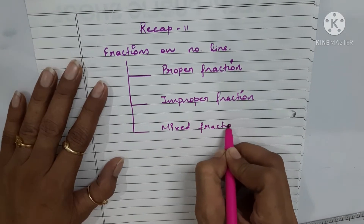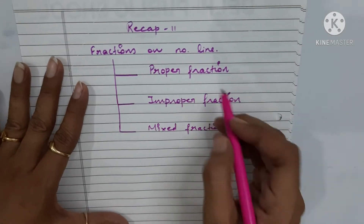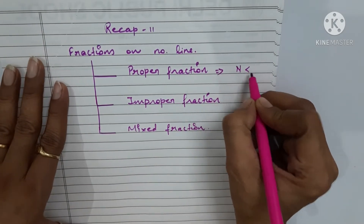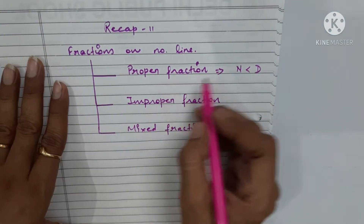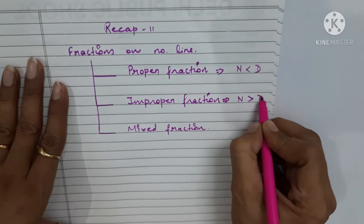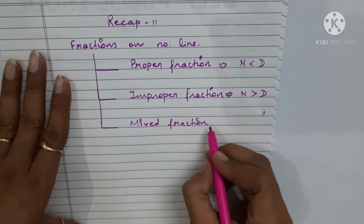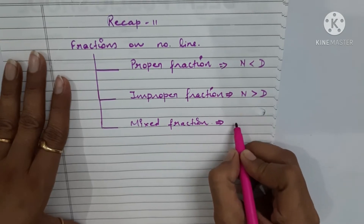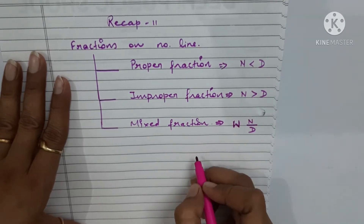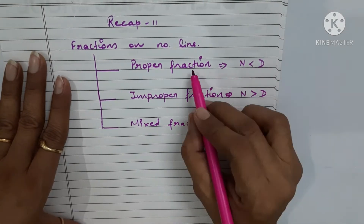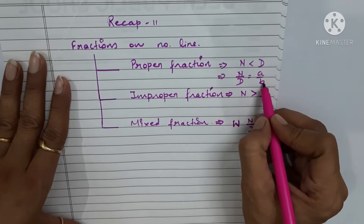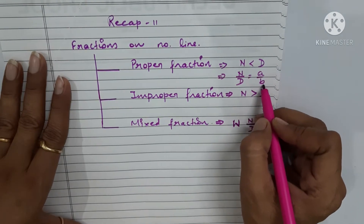Now, a proper fraction is one where the numerator is less than the denominator. In mixed fractions, the fraction is in the form of a whole number together with a numerator upon denominator. In proper fraction we write the fraction in a/b form — numerator upon denominator — where a and b belong to the whole numbers family and b is not equal to zero.